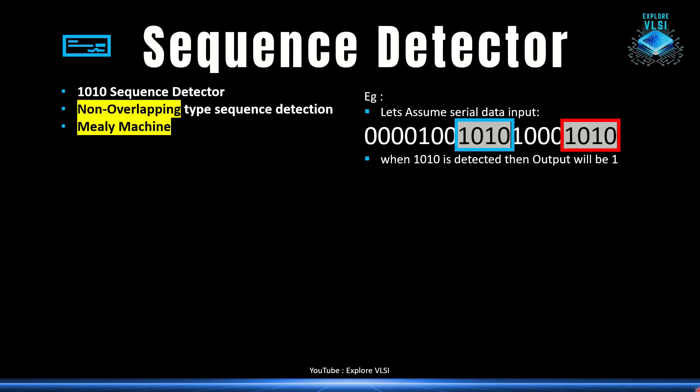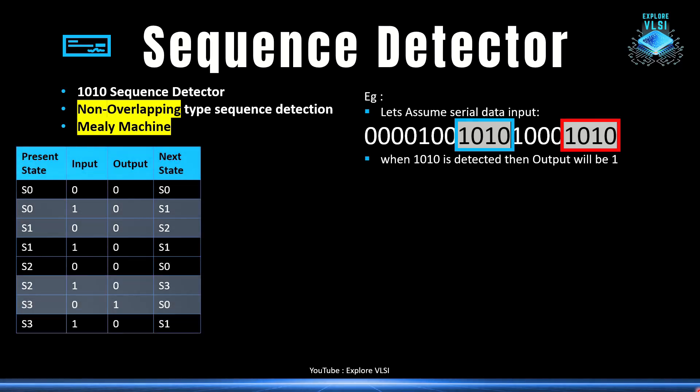In a Mealy machine, we write the output while transitioning from the fourth state to the next state. The output depends on both the input value and the current state. That's why we can have one state fewer. This is the state table we will be using.